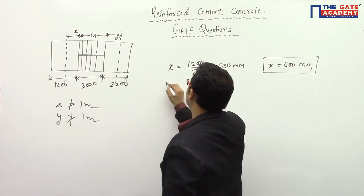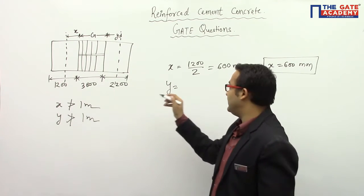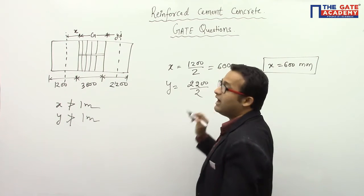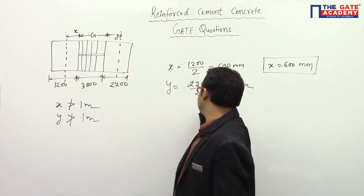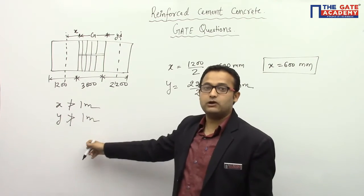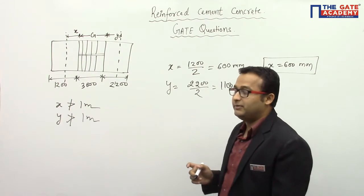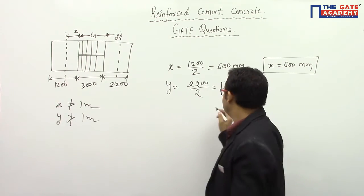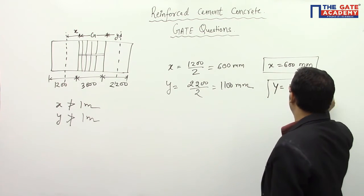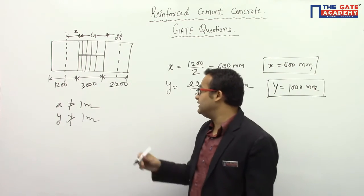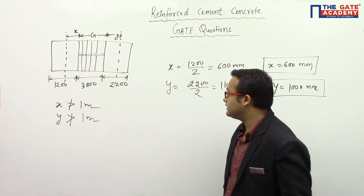Now for y: the total is given as 2200 mm, so y equals 2200 divided by 2, which is 1100 mm. Since 1100 mm is greater than one meter (1000 mm), y is greater than one meter. Therefore, as per IS 456:2000, when calculating the effective span, y is capped at one meter, so we take y equal to 1000 mm.